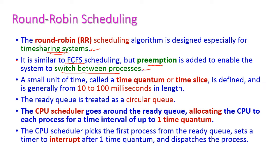Here, a small time unit, which is otherwise called as time quantum or time slice, is defined. The time slices vary from 10 to 100 milliseconds.